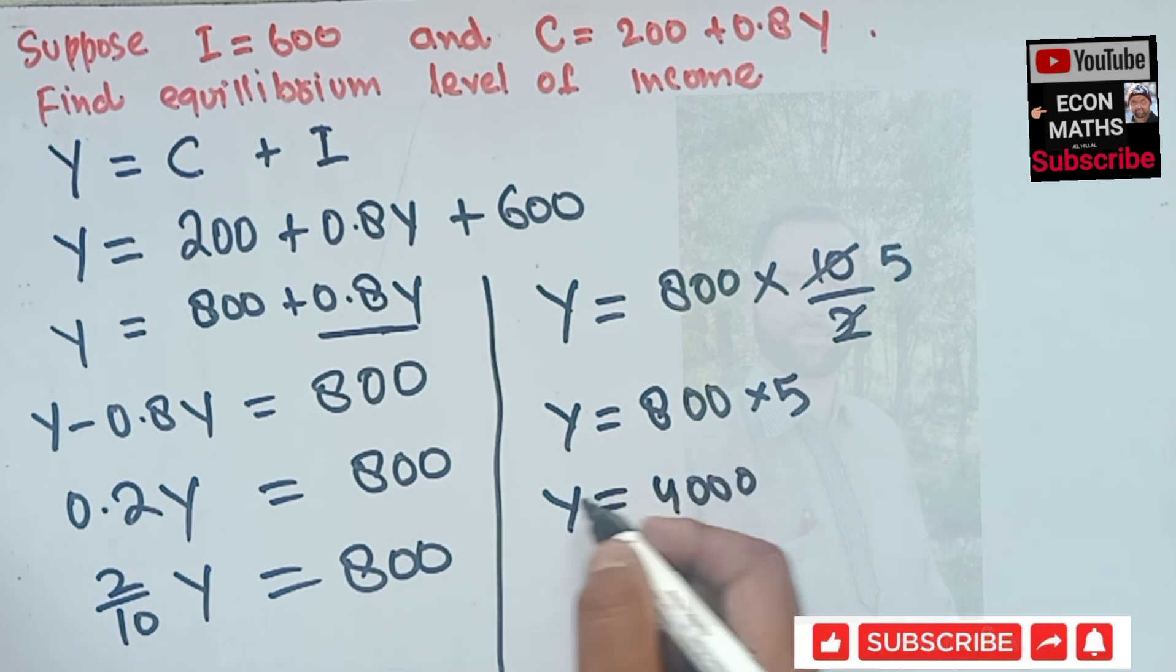So this is our equilibrium level of income. This was a very simple national income model from which we have calculated the equilibrium level of income. Thank you.